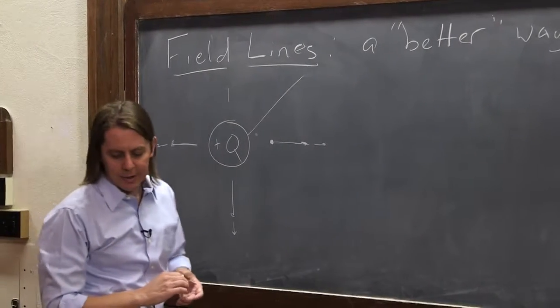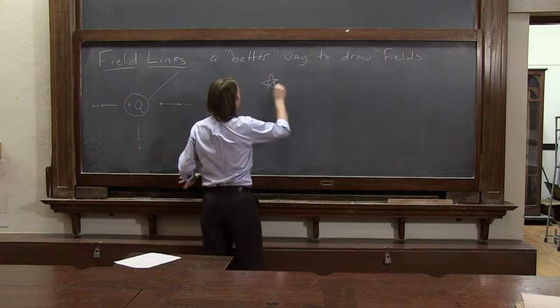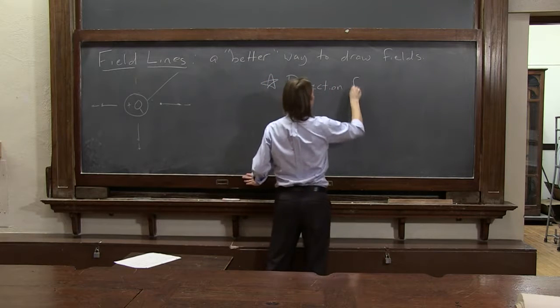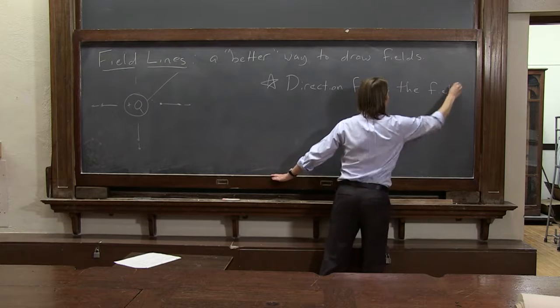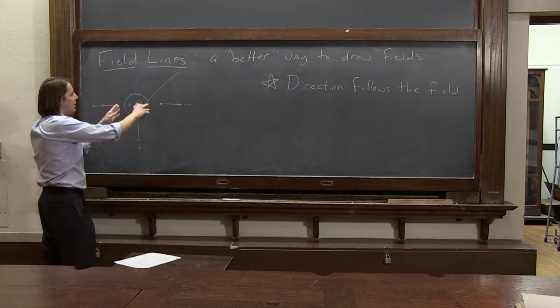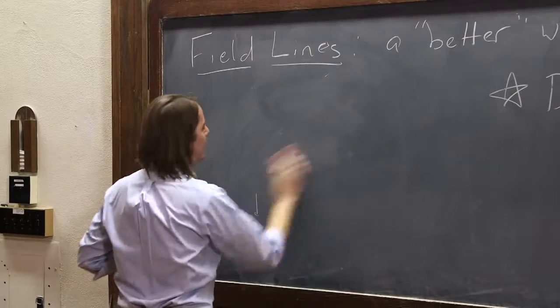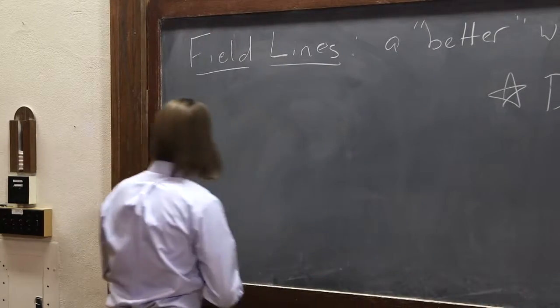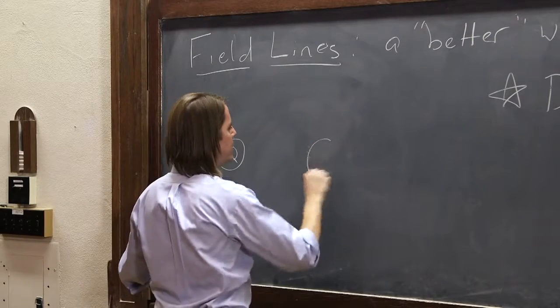So let's look at a few field lines. The first rule of field lines is that the direction follows the field. OK? So it's very similar to drawing the quiver plot, if you just think about a test charge. So let me erase this one, and we'll draw something a little bit more complicated to practice drawing field lines.